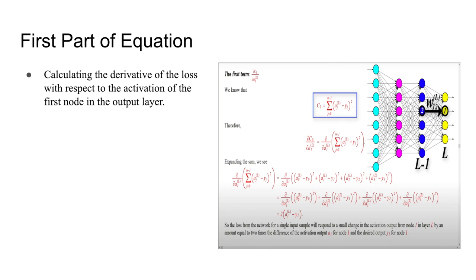The first part of the equation: you're trying to calculate the derivative of the loss with respect to the activation of the first node in the output layer. From the previous notation slide, we know that the cost function is as illustrated in the blue box. Thus, we can substitute it into our equation and simplify to simply two times the activation of the output layer, subtracted by the desired output y1 for node 1 of the output layer. This term essentially means that if the weight is changed by a certain amount, the loss will equate to two times the activation subtracted by the desired output y1.